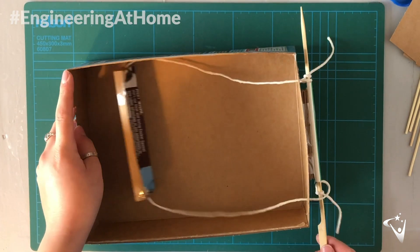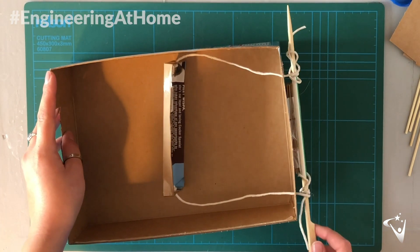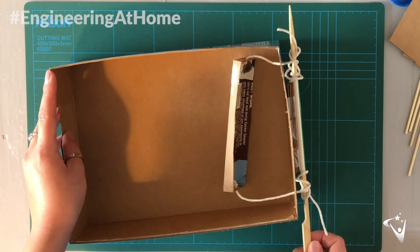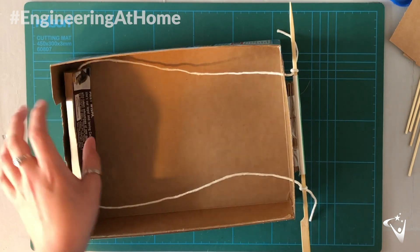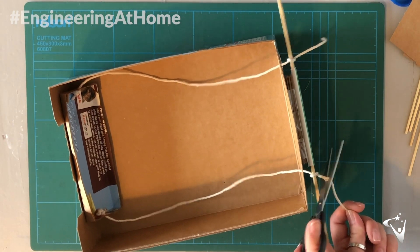Then as you wind the skewer your carriage should move up. You can see mine's a little bit wonky but you can improve upon that in your design. Then we can trim the string to neaten this up.